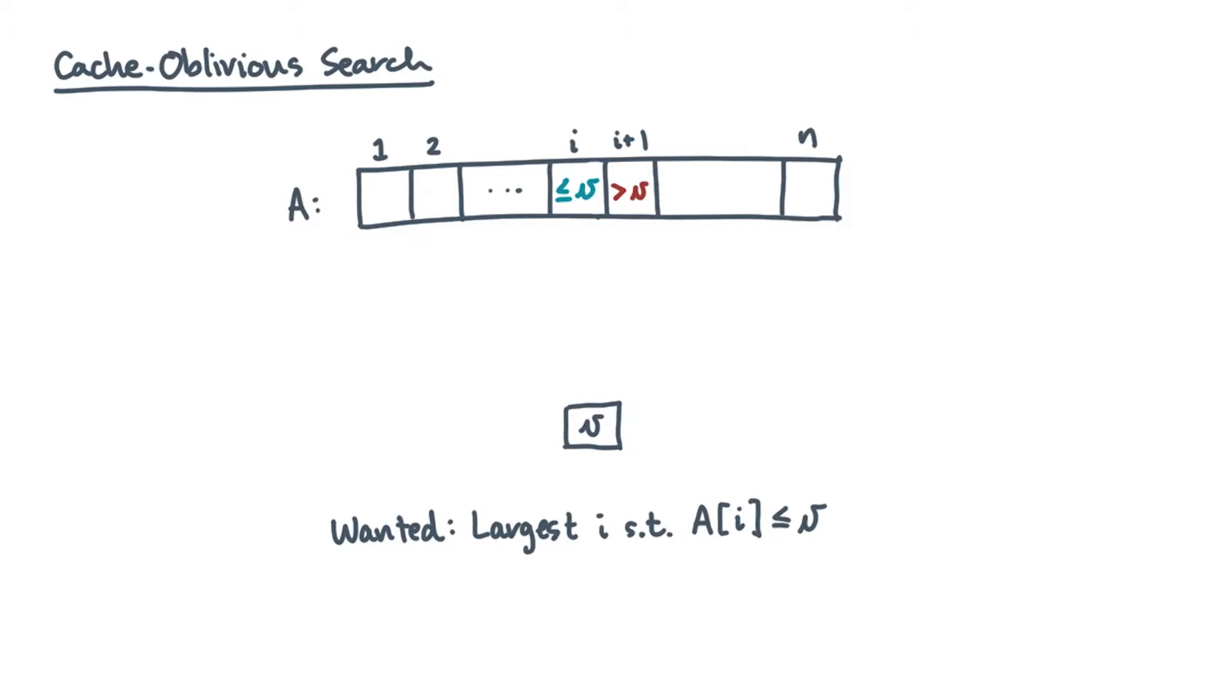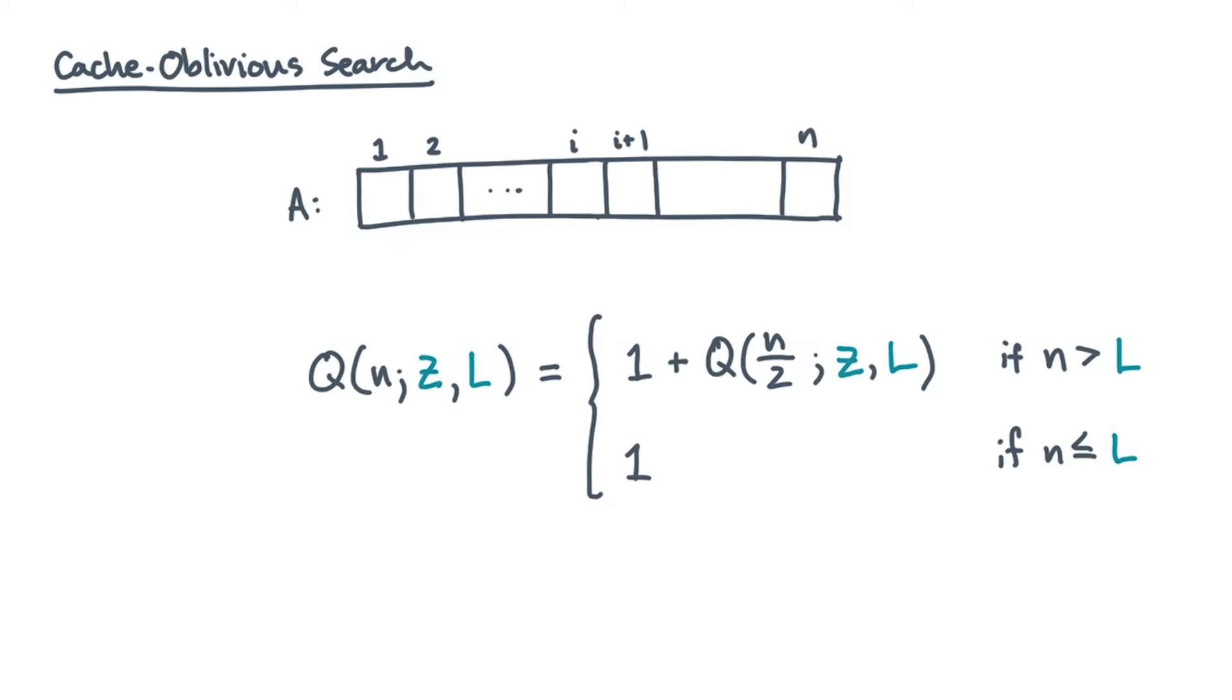To compute the number of cache misses, you'd set up a recurrence like so. Once the search interval falls within a cache line, there would be just one cache miss. Otherwise, you'd pay for one miss plus any additional misses to search the remaining half of the array. Solving the recurrence, you'd find the following.